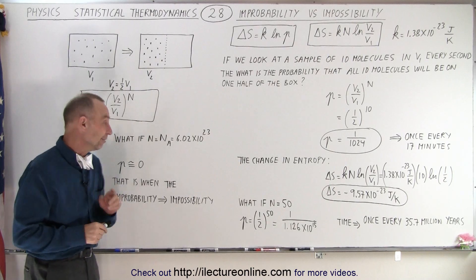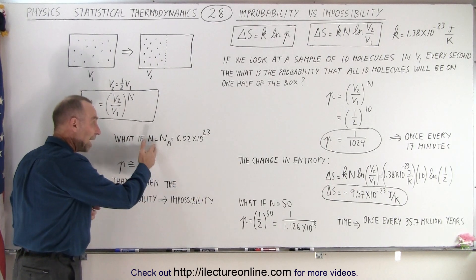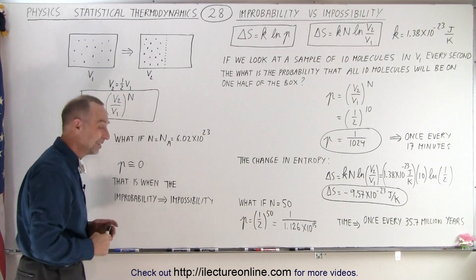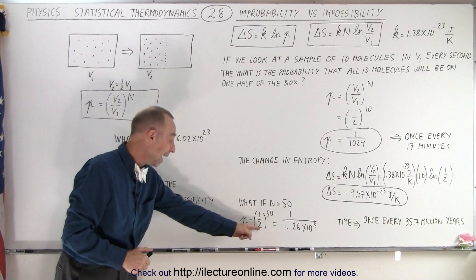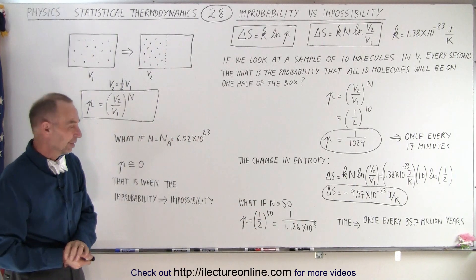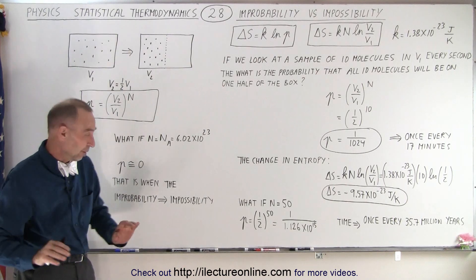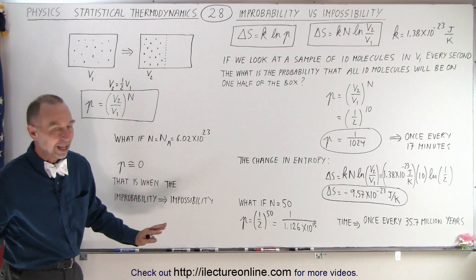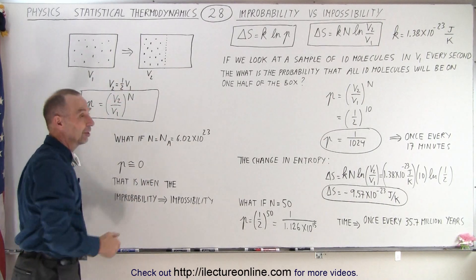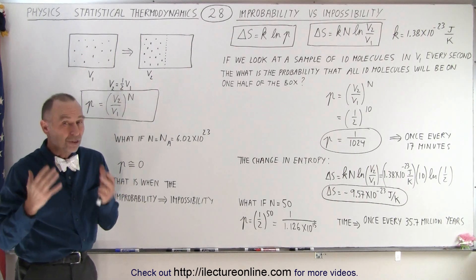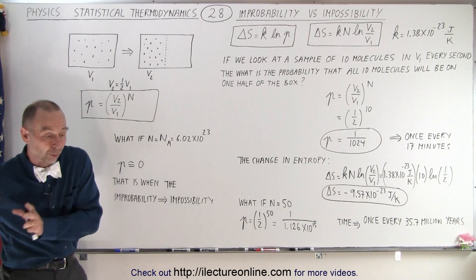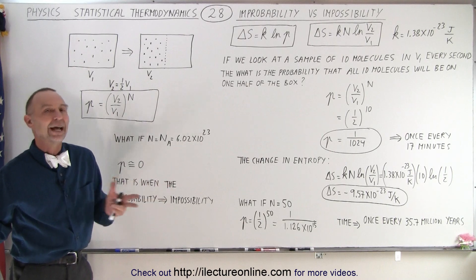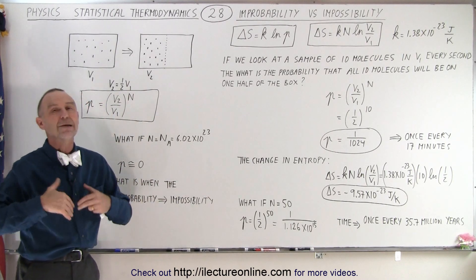But what if instead of having 50 molecules, we have Avogadro's number of molecules — a mole of molecules? We can then see that the probability of that occurring would be one half to the Avogadro's number as an exponent. That number would essentially be zero. And that's when we can say that instead of it being improbable, it would simply be impossible. When you have that many molecules in a box and you look once every second, it will simply never happen — it has become an impossibility instead of an improbability.